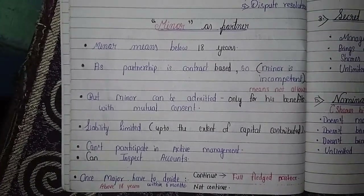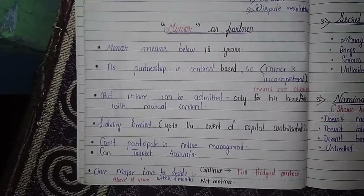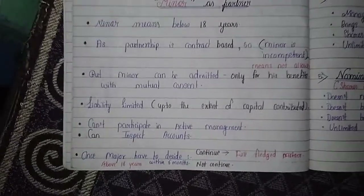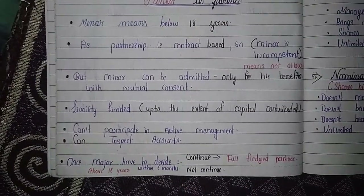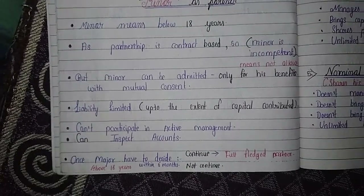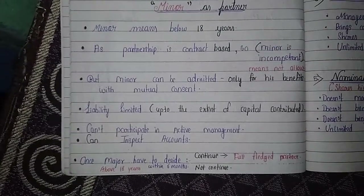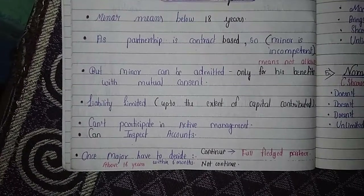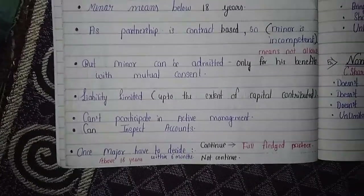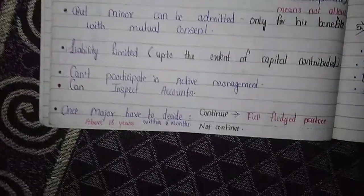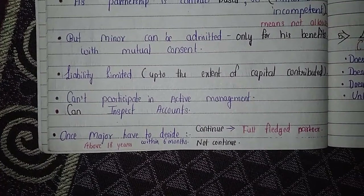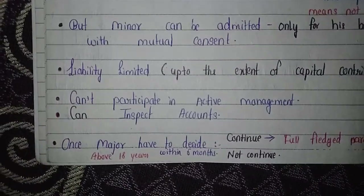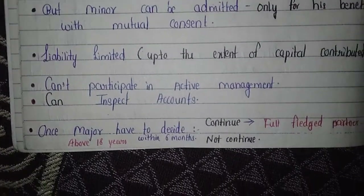When a minor is admitted for benefits only, his liability is limited — up to the extent of his capital contributed. He cannot participate in active day-to-day management, but he can inspect the accounts of the firm.